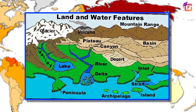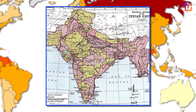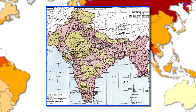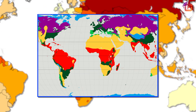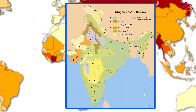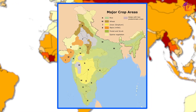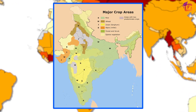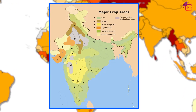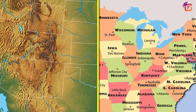Thematic maps are those maps which have some particular themes, like natural features of land, political divisions, climate, transport routes, distribution of agricultural crops, and many more specialized subjects.